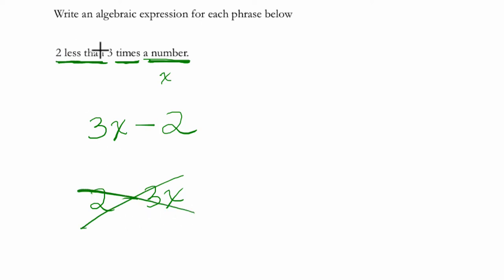If you see 'two less than something,' you know it's going to be that something - the part after the 'less than' will come first, and then the number before the 'less than' comes second.